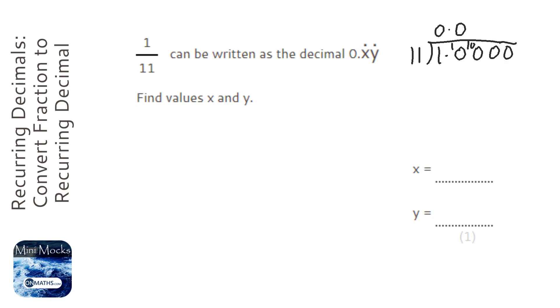I'm going to do it a slightly different way, although this method would work. What I'm going to do is get the denominator to 99, so I'm going to multiply top and bottom by 9.